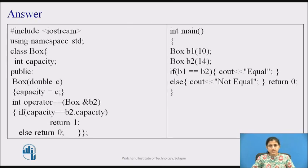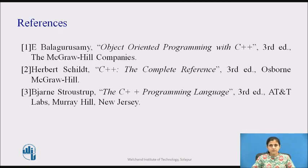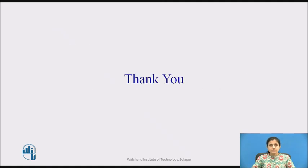The answer is shown here. The statement B1 == B2 calls the operator== function. Since operator== is a member function, object B1 is passed implicitly and object B2 is passed by reference. The class has a data member capacity of type integer. If the capacity of B1 equals the capacity of B2, it returns 1; otherwise it returns 0. If the returned value is 1, 'equal' is printed; else 'not equal' is printed. In this video, we have seen the concept of operator overloading. Thank you.